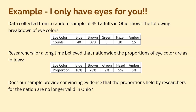Here's the problem. Data collected from a random sample of 50 adults in Ohio shows the following breakdown of eye color. So here we see one categorical variable — what is your eye color — and we see it across multiple categories: blue, brown, green, hazel, amber.